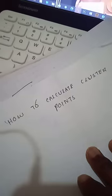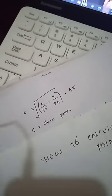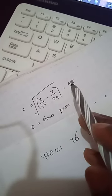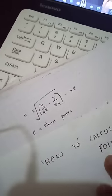We will be using this formula: C equals x over 48 times y over 84 times 48 root. So C is the cluster points.